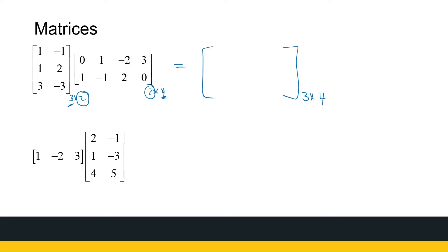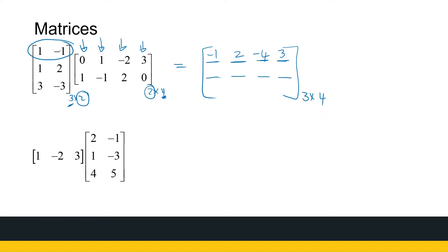Be systematic. I use row one of my first matrix and take the inner product with column one, then column two, and so on. First row's inner product with the first column: one times zero minus one times one is minus one. First row's inner product with the second column: one plus one is two. First row's inner product with the third column: minus two minus two is minus four. First row, fourth column: three plus zero is three. Calculation errors do happen, so keep track and make sure you're not adding or multiplying incorrectly.